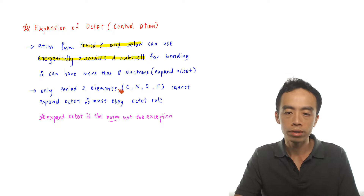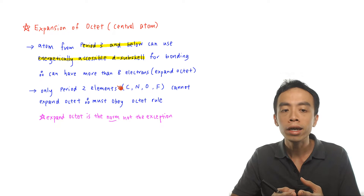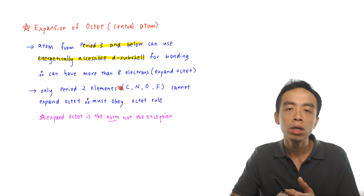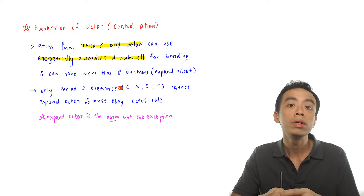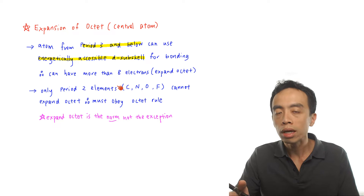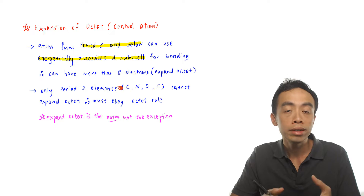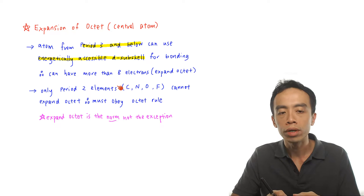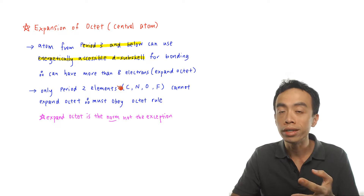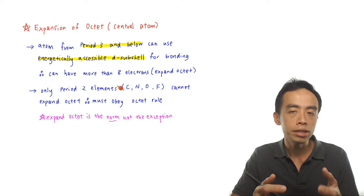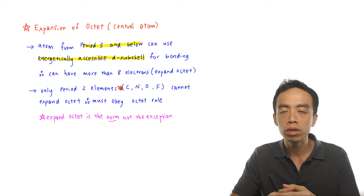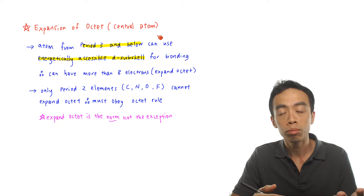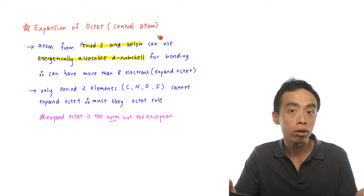Only period 2 elements cannot expand octet and therefore must obey the octet rule. For period 2 elements, the principal quantum number is 2, so at n=2 we only have the 2s subshell, which can hold up to 2 electrons, and the 2p subshell, which can hold up to 6 electrons — a total of only 8 electrons. So period 2 elements cannot expand octet. Elements like carbon, nitrogen, oxygen, and fluorine cannot expand octet. All elements in period 3 and beyond — period 3, 4, 5, and so on — can expand octet if necessary.